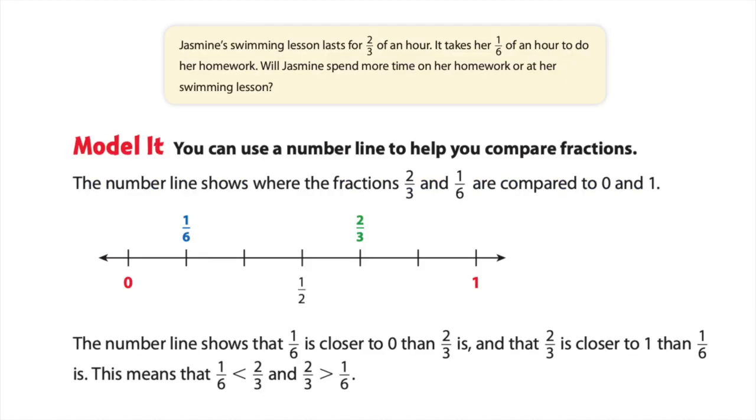Well, first let's model it by thinking about a number line. You can use number lines to help you compare fractions. On this number line we showed where two-thirds is in the green and we showed where one-sixth is in the blue. We also marked zero and one and one-half to help us compare these.